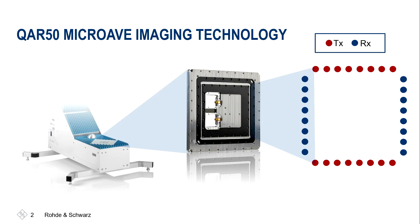Let us focus on the clusters of the QAR50. The clusters consist of 96 transmit and 96 receive antennas, positioned as shown on the right-hand side of the slide. The cluster itself is 45 degrees tilted inside the QAR because the antennas are 45 degrees tilted. By rotating the cluster 45 degrees again, we have a horizontal or vertical positioning of the transmit and receive antennas and can therefore adapt to the polarization of the actual radar.